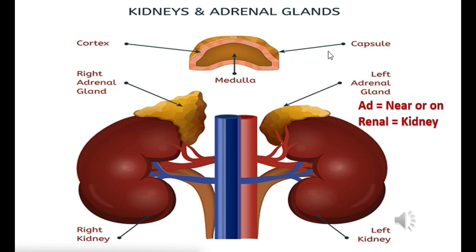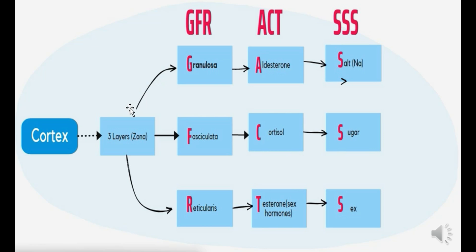The cortex has three histological layers, and we will go through them with the mnemonics. They're called zona: the outer one granulosa, the middle one fasciculata, and the inner one reticularis.